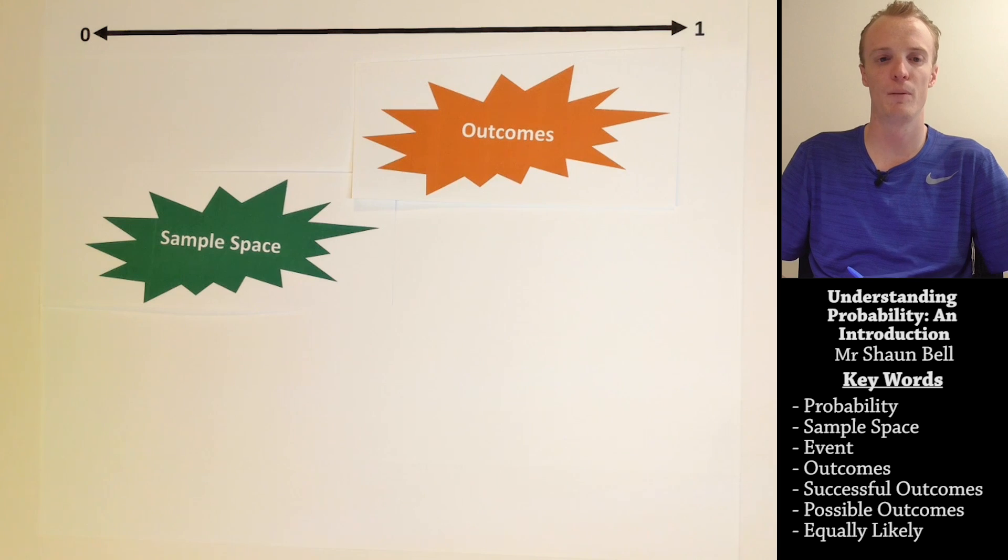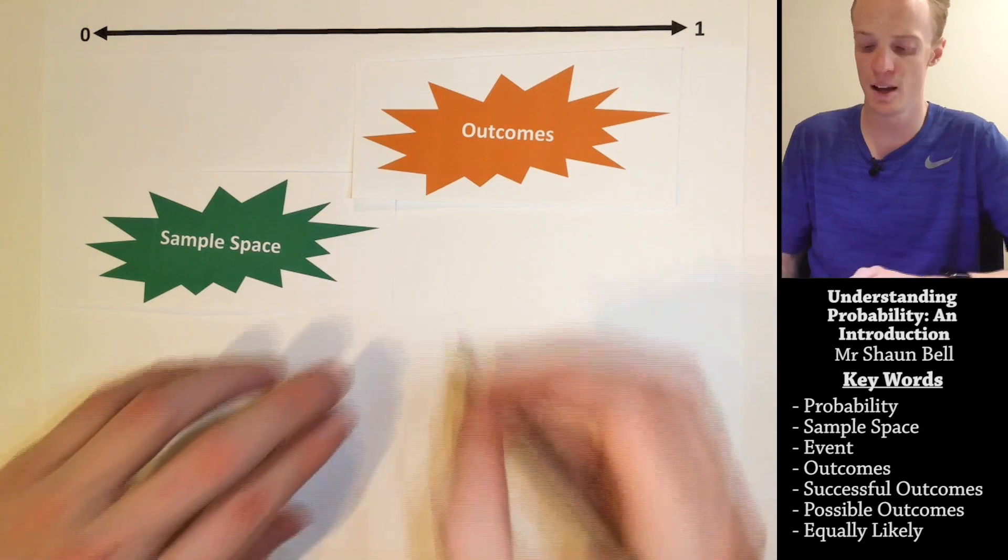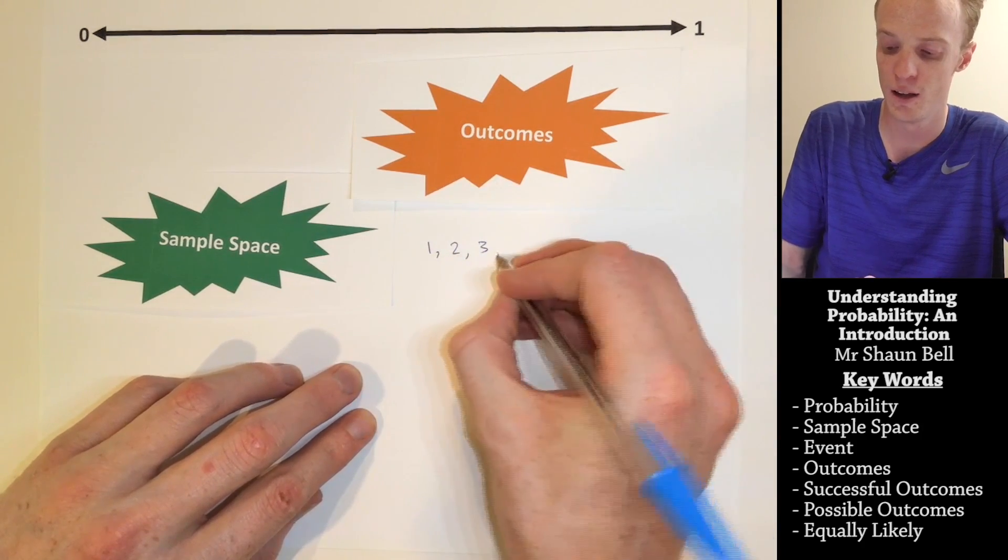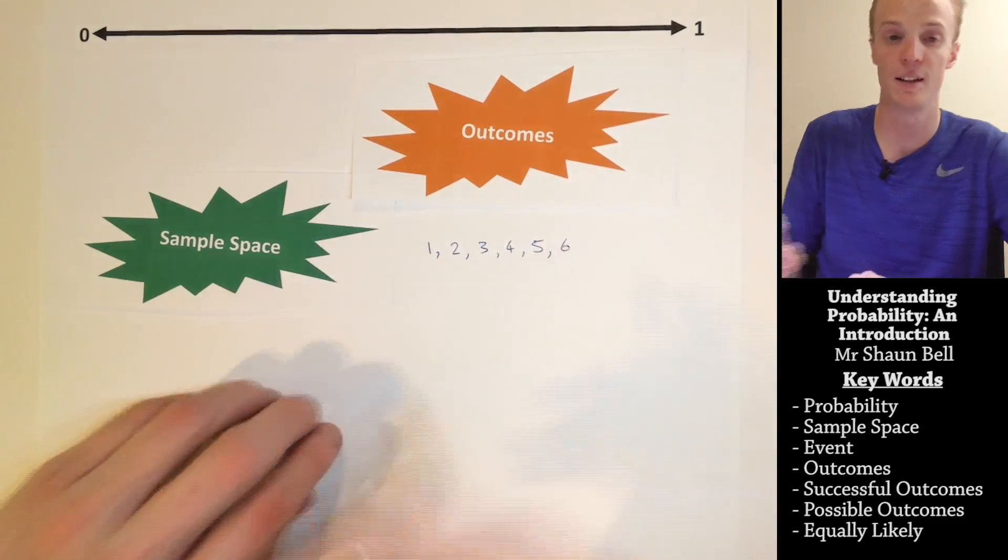Let's think about a different problem. What if we rolled a normal six-sided die? The possible outcomes in our sample space would be rolling a 1, a 2, a 3, a 4, a 5, or a 6.